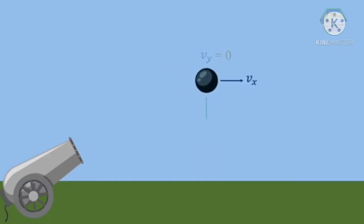When the velocity along the Y direction is equal to zero, the cannonball has its maximum height from the ground. The cannonball continues its parabolic path.